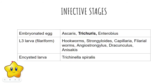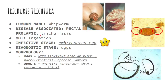Please take note — this is a recall question: the infective stage of Trichuris is the embryonated egg. Trichuris trichura, otherwise known as the whipworm, is associated with the diseases rectal prolapse and trichuriasis.